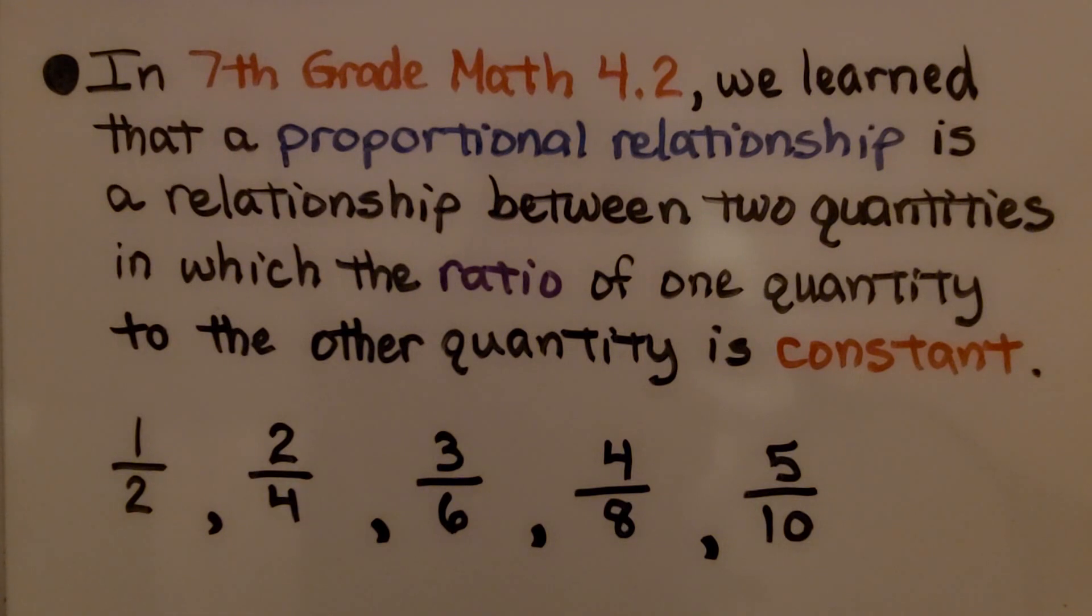In seventh grade math 4.2, we learned that a proportional relationship is a relationship between two quantities in which the ratio of one quantity to the other quantity is constant.